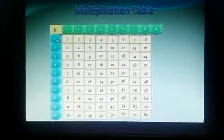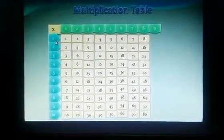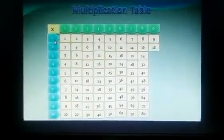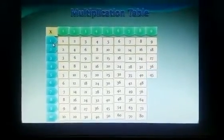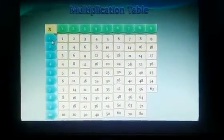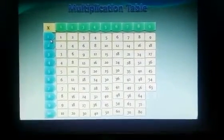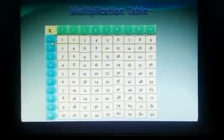Now, times table of 9. 9 times 1 is 9, 9 times 2 is 18, 9 times 3 is 27, 9 times 4 is 36, 9 times 5 is 45, 9 times 6 is 54, 9 times 7 is 63, 9 times 8 is 72, 9 times 9 is 81, 9 times 10 is 90.